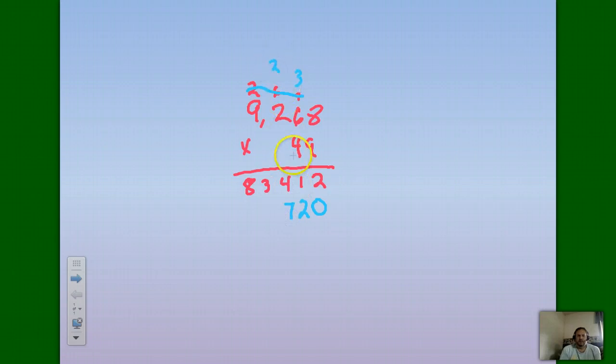Put the 7 down there, carry the 2. 4 times 2 is 8, 8 plus 2 more is 10. 0 here, carry the 1. 4 times 9 is 36, 36 plus 1 more, 37.